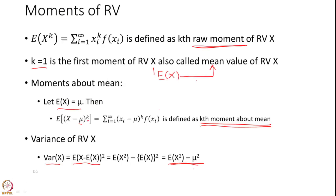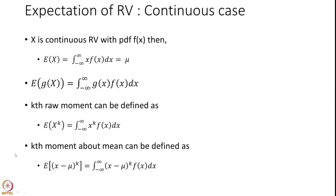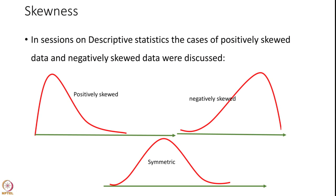Please note that the variance formula applies to both continuous and discrete cases. We now come to another important measure which we briefly introduced in descriptive statistics: skewness. If a data is positively skewed it has a long tail on the right side, and if the data is negatively skewed it has a long tail on the left side. Symmetric data does not have a long tail anywhere and forms a nicely symmetric bell-shaped curve.